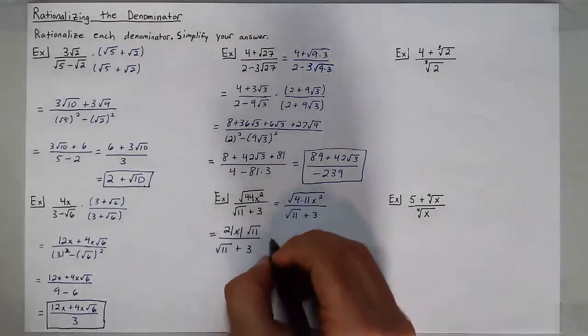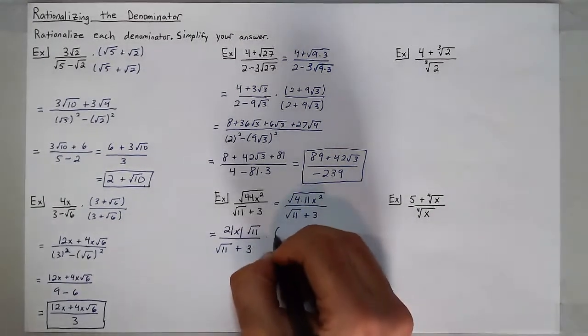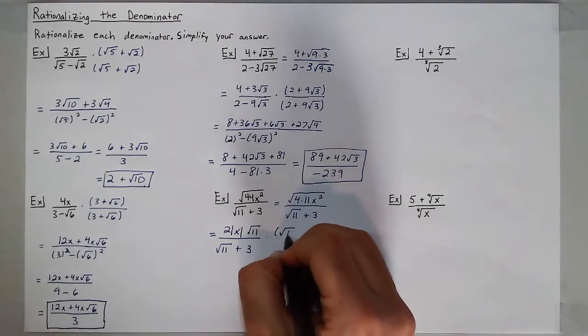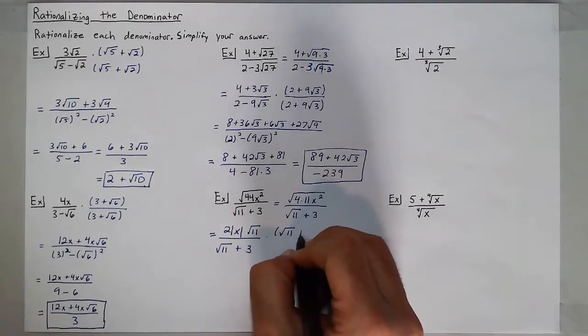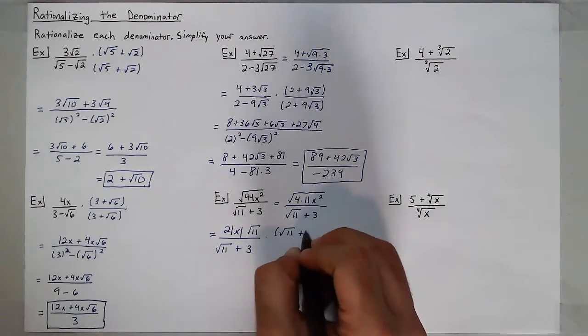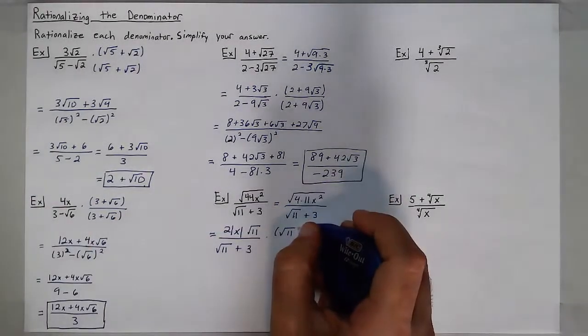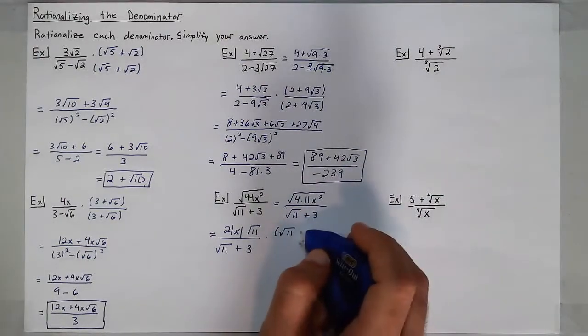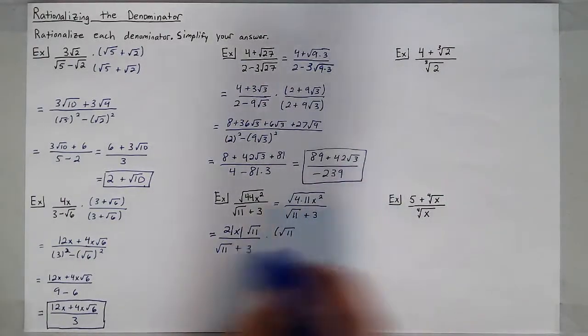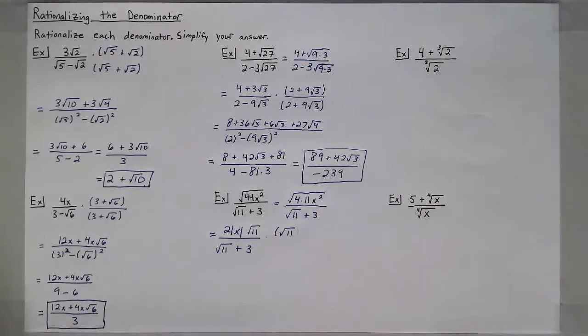Now simplifying, I'll multiply my numerator and denominator by the conjugate of the denominator, which is not square root of 11 plus 3 — it's actually square root of 11 minus 3, because you take the opposite sign.